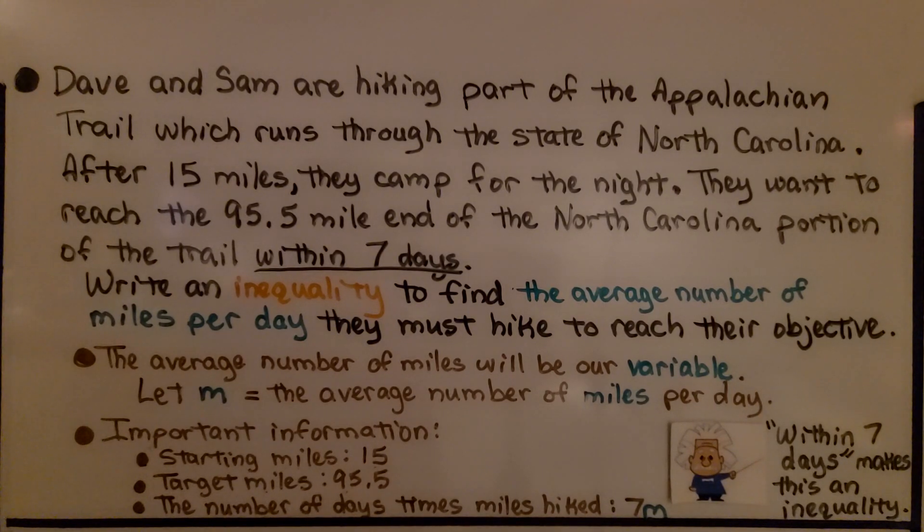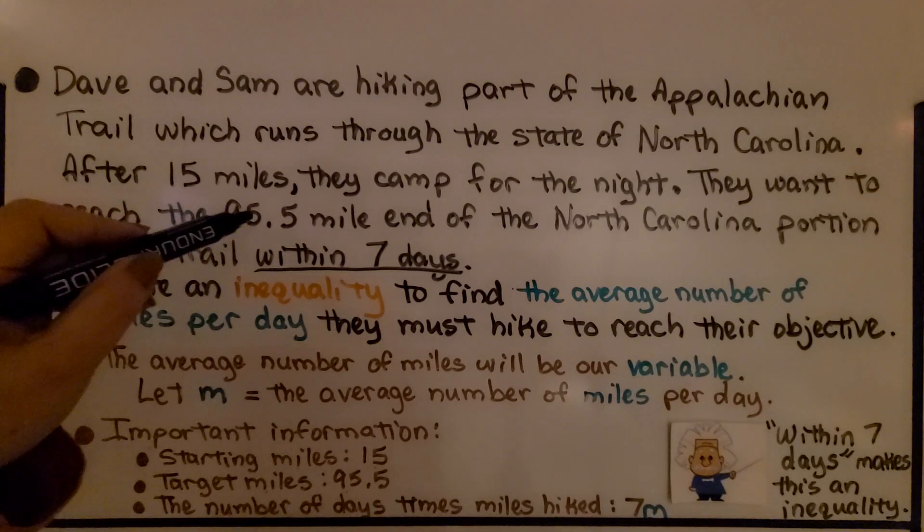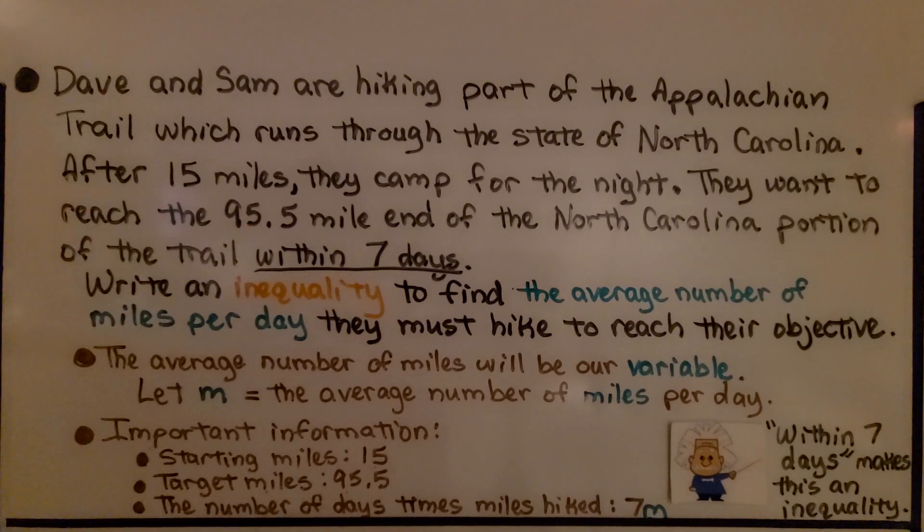Dave and Sam are hiking part of the Appalachian Trail, which runs through the state of North Carolina. After 15 miles, they camp for the night. They want to reach the 95 and 5 tenths mile end of the North Carolina portion of the trail within seven days. Write an inequality to find the average number of miles per day they must hike to reach their objective. Their objective is to do it within seven days.